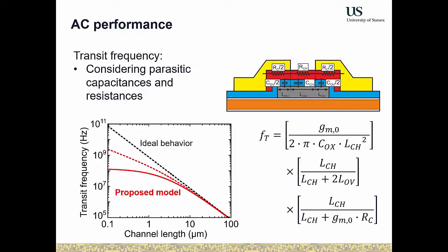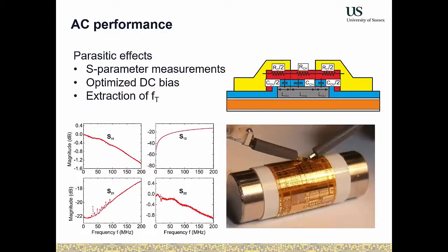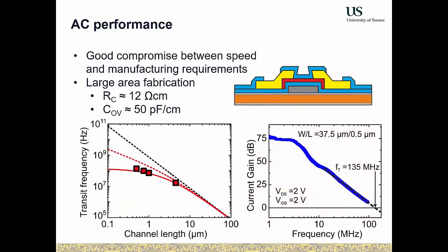We verify the model by measuring transit frequency using a network analyzer. We measure S-parameters with optimized DC bias points, convert them into frequency-dependent current gain, and identify the unity gain frequency as the transit frequency. We can reach relatively high values for flexible electronics, and the measurements follow the trend determined by the contact resistance. This means we understand what's happening and know how to design transistors to optimize both frequency and yield.